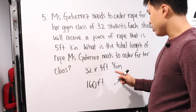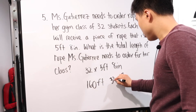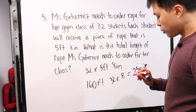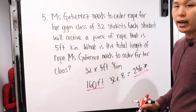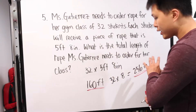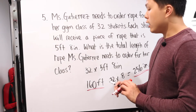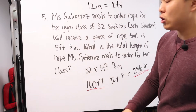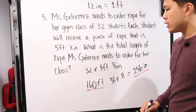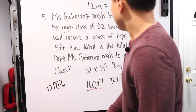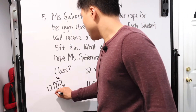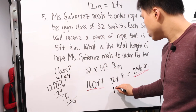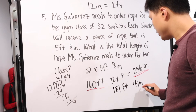Now the other part: 32 times eight inches is 256 inches. The answer won't leave it in that form — it needs to be in its most simplified mixed unit. The key conversion: 12 inches equals one foot. So divide 256 by 12: that goes in 21 times with a remainder of 4, giving 21 feet and 4 inches. Adding to the 160 feet gives a total of 181 feet and 4 inches.